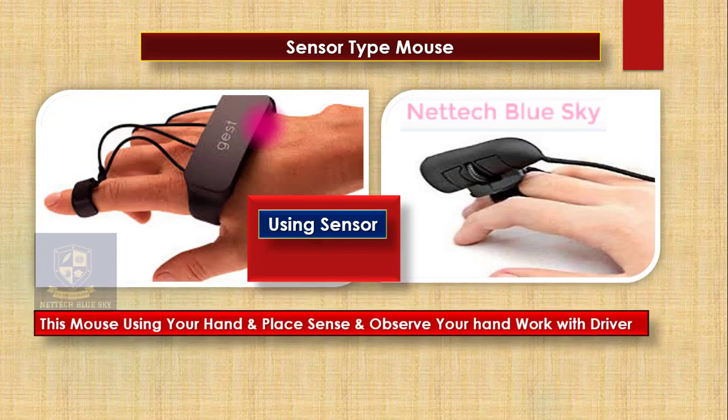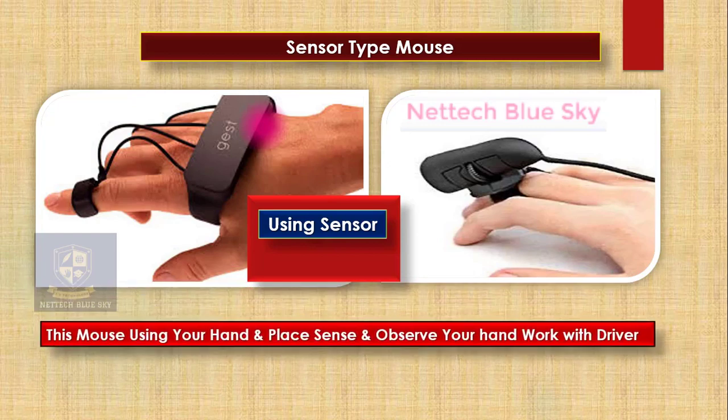First, you move this mouse using your hand, and it senses and observes your hand work with a driver. This sensor type driver works with your hand or your placement, sensing and observing your fingering on the sensor device. This is a computer mouse available in both wired and wireless systems.